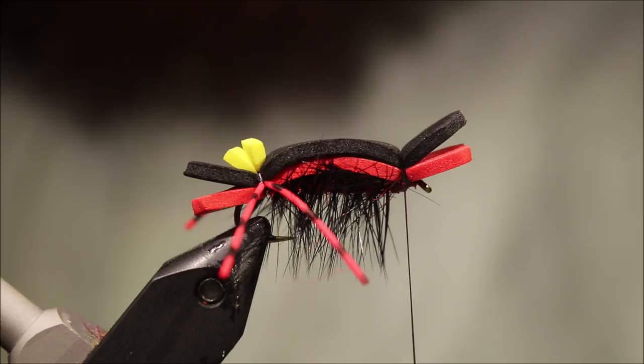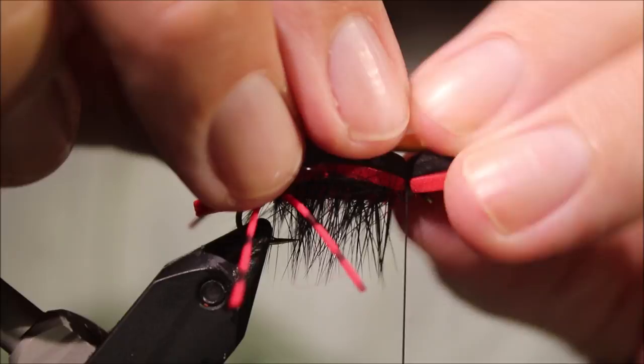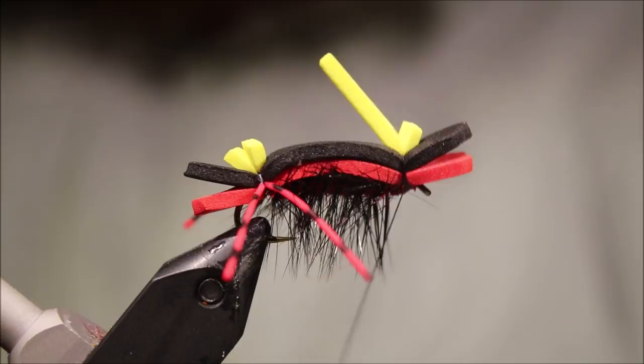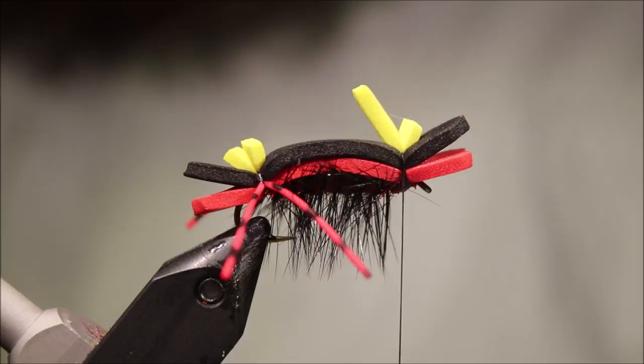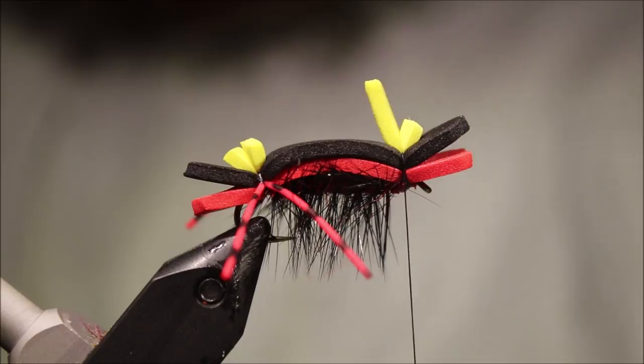We're going to come in with another wee bit of foam as an indicator. Color choice is up to you. Couple of turns of thread. I like to leave this front one a wee bit longer so it sticks up, so it's actually like a sighter. These wee ones, I know everybody adds them, but I don't know how much they add. This I think is a lot more visible.